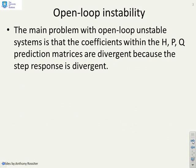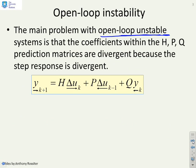Open-loop instability: the main problem with open-loop unstable systems is that the coefficients within the prediction matrices are divergent. So if you had a CARIMA model, you have an H matrix, a P matrix, and a Q matrix — and if you look at these with an unstable open-loop process, you'll see that as you go down the rows the coefficients get bigger and bigger and basically explode exponentially.